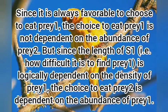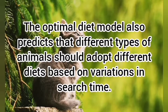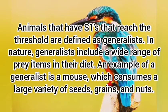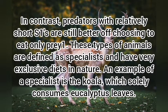Since it is always favorable to eat prey 1, the choice to eat prey 1 is not dependent on the abundance of prey 2. However, since S1 — how difficult it is to find prey 1 — is dependent on the density of prey 1, the choice to eat prey 2 is dependent on the abundance of prey 1. The optimal diet model also predicts that different animals should adopt different diets based on variations in search time. Animals with S1s that reach the threshold are generalists, which include a wide range of prey items, such as a mouse consuming seeds, grains, and nuts. Predators with relatively short S1s are specialists with exclusive diets, such as the koala, which solely consumes eucalyptus leaves.